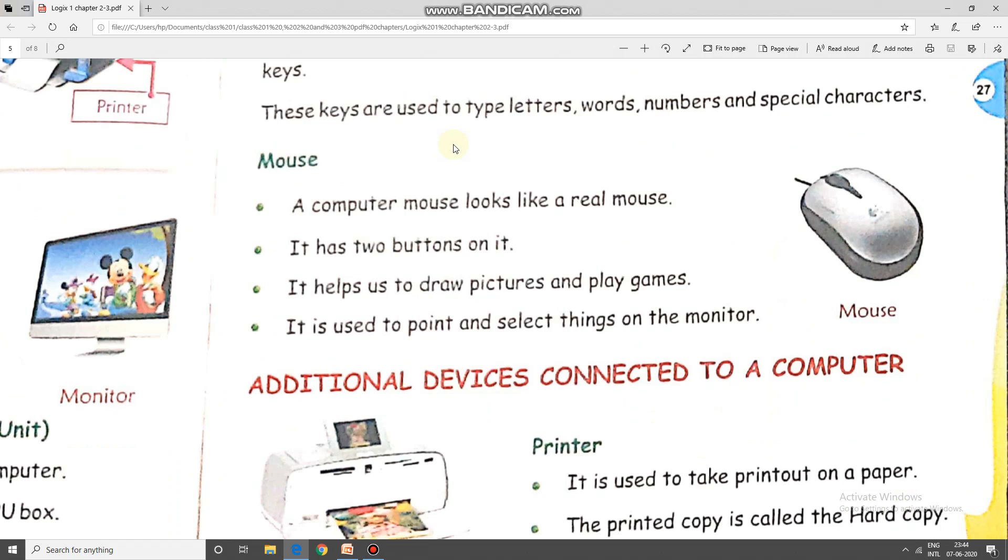The fourth part of a computer is mouse. Number one, a mouse looks like a real mouse. Now, what is a mouse? Mouse is an input device, a device which looks like a mouse that you may find at your home sometimes.